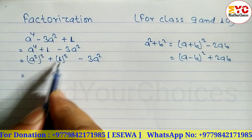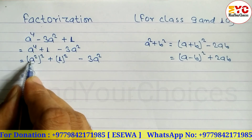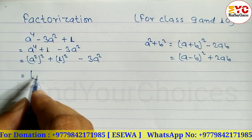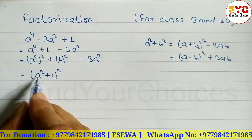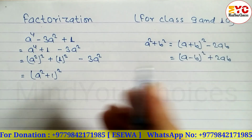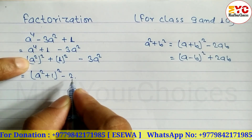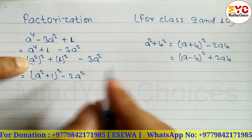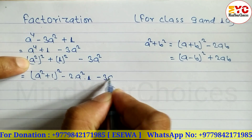Now, using the first formula — a² + b² = (a + b)² minus 2ab — in the place of a we have a², and in the place of b we have 1. So we can write (a² + 1)² minus 2 times a² times 1, which gives us minus 2a², then minus 3a².